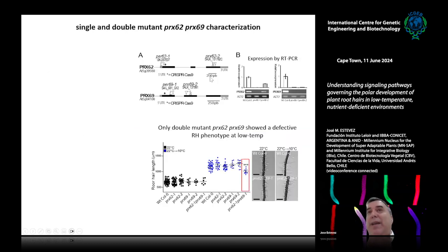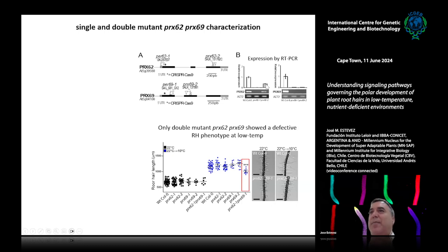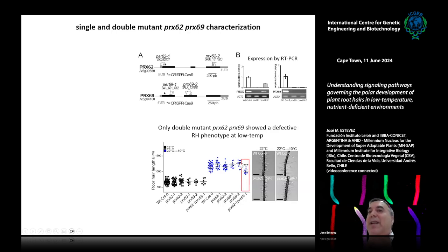We isolated T-DNA mutants — two for peroxidase 62 and two for peroxidase 69. Most were null with no expression; peroxidase 62-2 had a little expression remaining. When we looked at the phenotype, it's worth noting there are 69 or 72 apoplastic peroxidases encoded in the Arabidopsis genome, so redundancy is expected. As expected, single mutants had no phenotype. Only the double mutant for peroxidase 62 and 69 showed impaired root hair growth at 10°C compared to wild type.